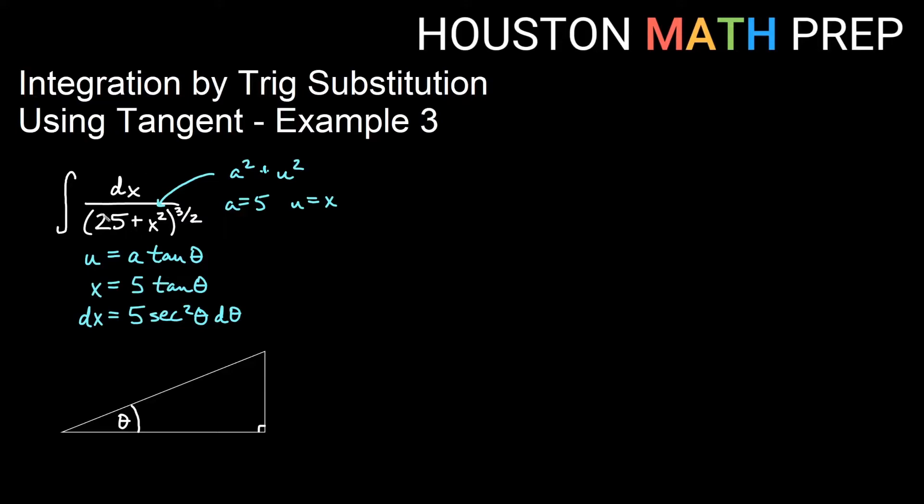We'll be able to use those to plug in and substitute everything in terms of theta. This x equals 5 tan theta. If we divide both sides by 5, I can see that tangent of theta equals x over 5, and hopefully I remember that tangent is equal to the opposite over the adjacent in a right triangle.